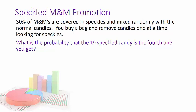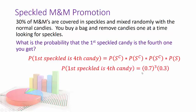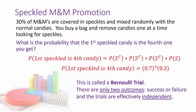This is pretty straightforward. We're looking at: not speckled, not speckled, not speckled, and then finally a speckled one on the fourth. That's a multiplication: 0.7 cubed times 0.3, because the first three are failures and the last one is success. So we calculate 0.7³ × 0.3.